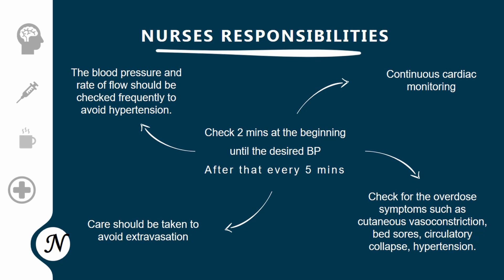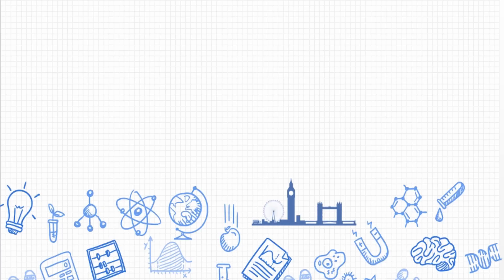Since peripheral vasoconstriction makes the patient more prone to bed sores and circulatory collapse, these overdose symptoms must be checked frequently. Care should also be taken to avoid extravasation in case the patient is on a peripheral line.